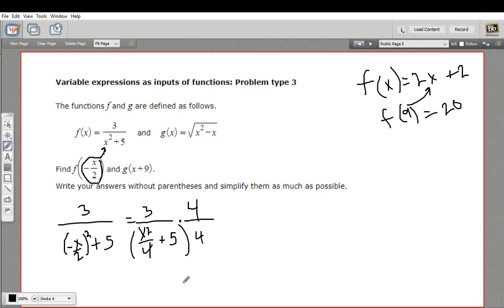On the top I would get 3 times 4, so that's 12. On the bottom I get 4 times x squared over 4, the 4s would cancel, it's just x squared.